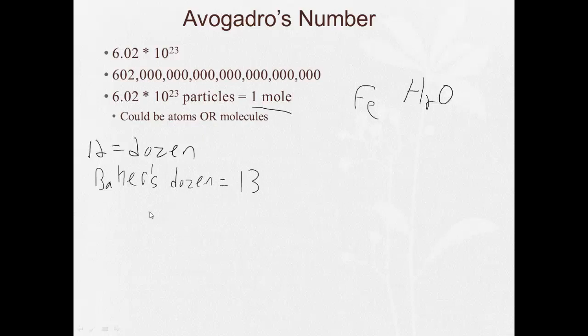If you get a case of soda, there's 24 cans or bottles of soda in the case. So we're used to dealing with these special names for certain amounts of things. Most common, of course, being the dozen.